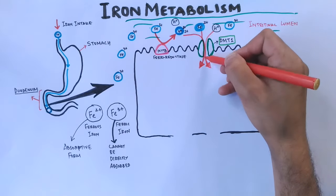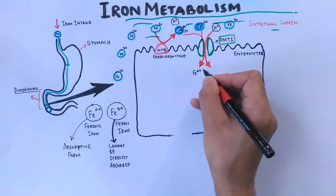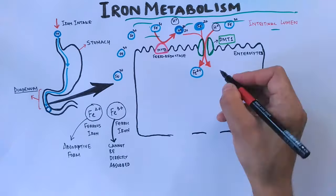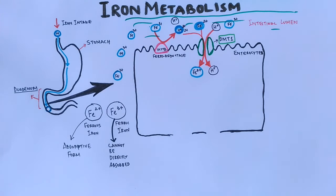After that, these Fe2+ ions are transported into the enterocyte via DMT1 transporter. As shown in the figure, DMT1 is a symporter so it transports two different molecules at a time in one direction. In that case, it transports protons along with ferrous iron.